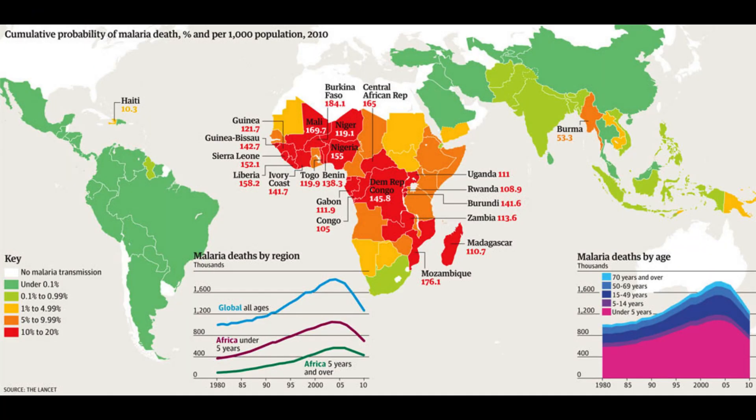Let's compare this to the Plasmodium life cycle — the causal agent of malaria. The most deadly species is Plasmodium falciparum, and in 2020 alone there were 240 million cases worldwide, which resulted in over 625,000 deaths. The World Health Organization's report on malaria showed that nearly 95% of all cases and deaths occurred in sub-Saharan Africa.